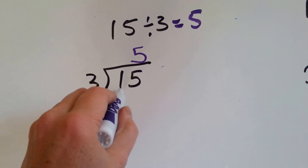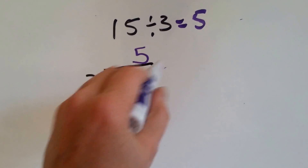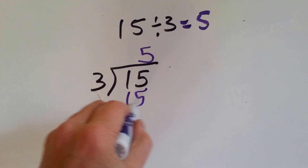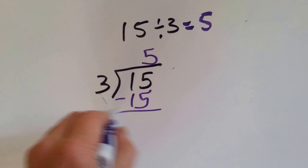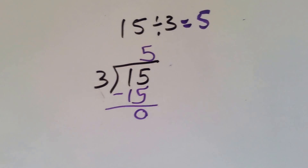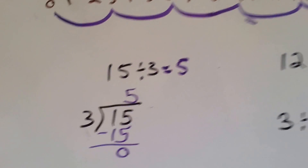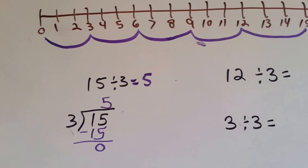3 times 5 is 15. We do our subtraction, get 0, and that means we did it correctly.